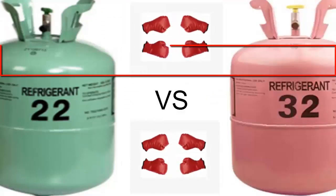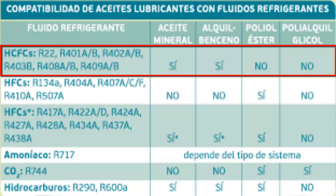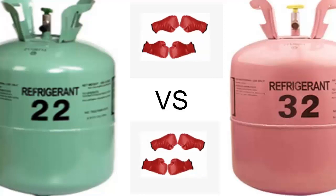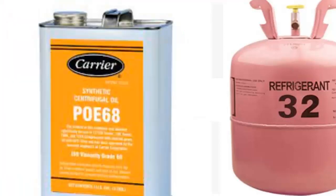Another significant disparity between these two refrigerant agents is their compatibility with different oil variants. R22 is compatible with mineral oil and alkylbenzene, but is not suitable to be combined with POE oil. On the other hand, R32 is congruent and used in conjunction with POE oil.